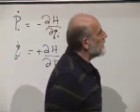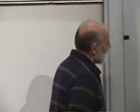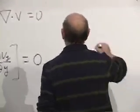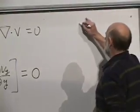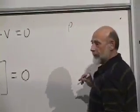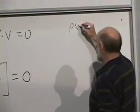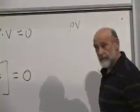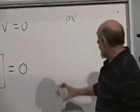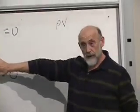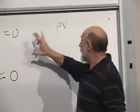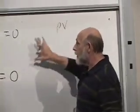If I hadn't assumed uniformity of the density, what you'd have to do is invent the new quantity, which is the density at any point times the velocity, and that would be the thing which would have zero divergence. But if the density is uniform, then that factors out.